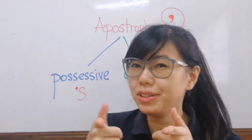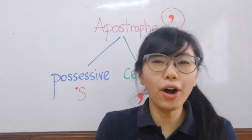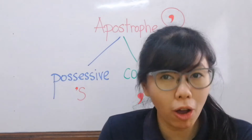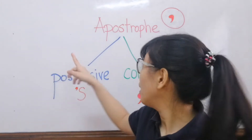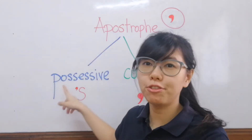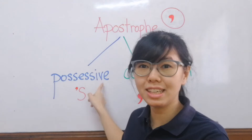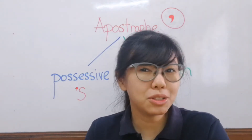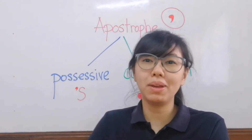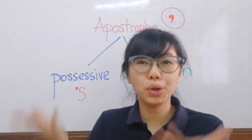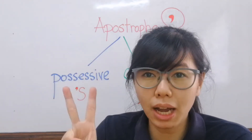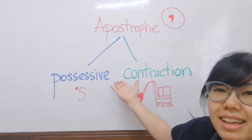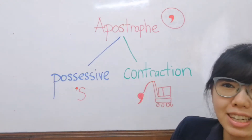I need to know, you need to know, we all need to know that there are two types of apostrophes. We have learned the first type which is called possessive — the apostrophe S. This shows which belonging belongs to who. And the second type of apostrophe is called contraction.